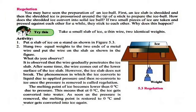The melting point of ice becomes lower than 0 degrees Celsius due to pressure. This means that at 0 degrees Celsius the ice gets converted into water. As soon as pressure is removed, the melting point is restored to 0 degrees Celsius and water converts into ice again. The phenomenon in which ice converts to liquid due to applied pressure and reconverts to ice once the pressure is removed is called regelation.